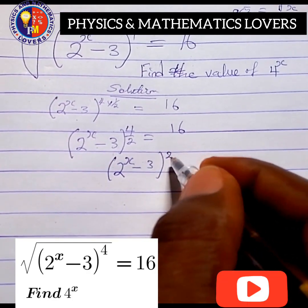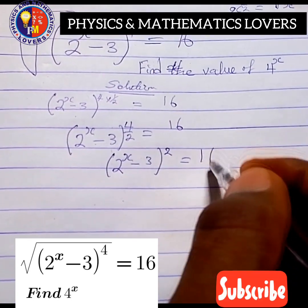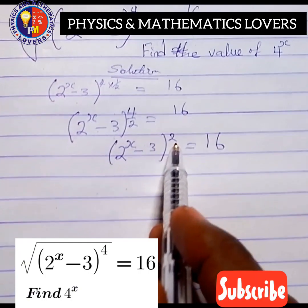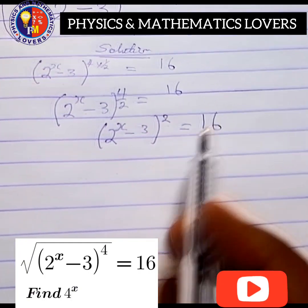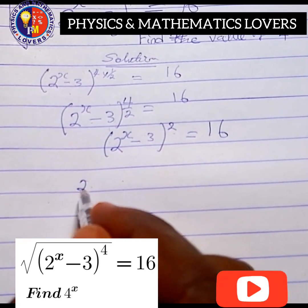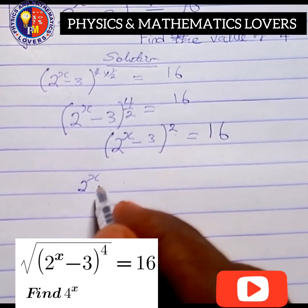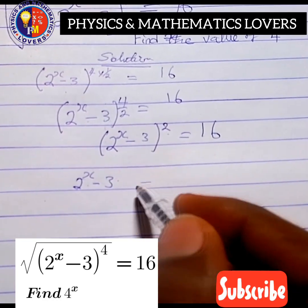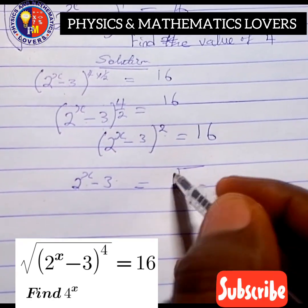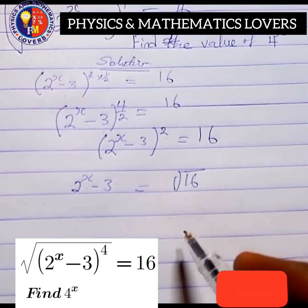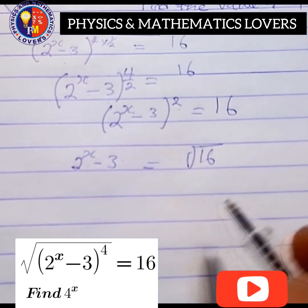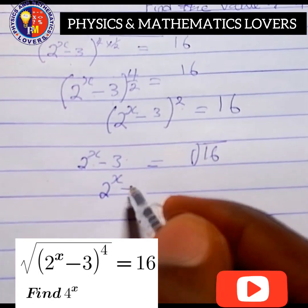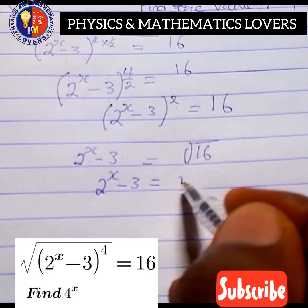The next thing we are going to do is deal with the right-hand side. We find the square root of 16. So at this point we have 2 raised to power x minus 3, and removing the remaining power gives us equal to the square root of 16. The square root of 16 is equal to 4. So therefore we have 2 raised to power x minus 3, equal to 4.